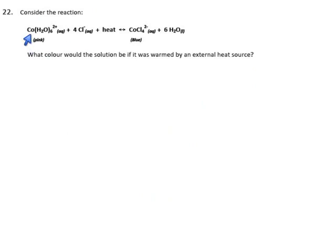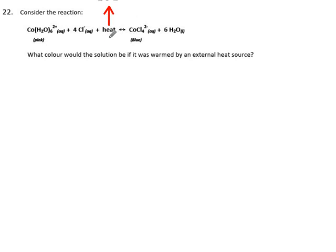We have cobalt hexahydrate and chloride and heat, which turns into a cobalt chloride ion and water. The cobalt hexahydrate compound is pink, while the cobalt chloride ion is blue. If we're warmed by an external heat source — adding heat — Le Chatelier's Principle says the system will try to consume that heat. It will consume heat and chlorides, while producing the blue product. So the solution will become less pink and more blue.